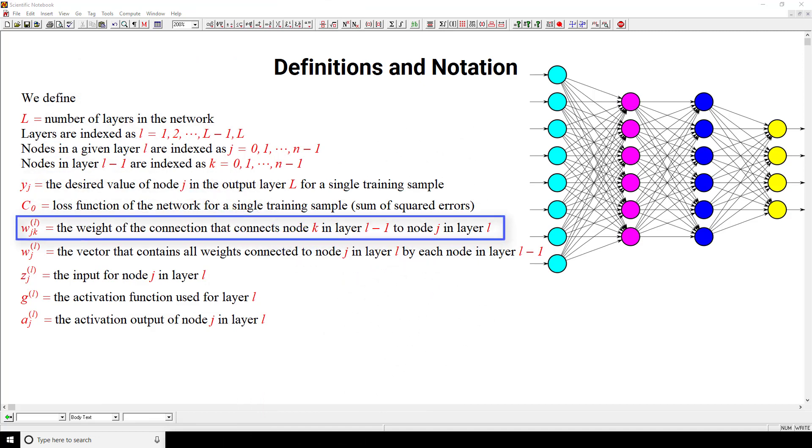Next we have W sub jk superscript small l. Note that this is a superscript, it's not an exponent. And this is equal to the weight of the connection that connects node k in layer l minus 1 to node j in layer l. And you can see that in this illustration here.